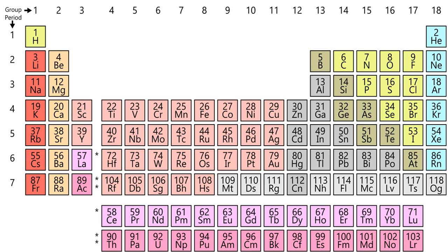With the elements arranged in a spiral on a cylinder by order of increasing atomic weight, de Chancourtois showed that elements with similar properties seemed to occur at regular intervals. His chart included some ions and compounds in addition to elements. His paper also used geological rather than chemical terms and did not include a diagram; as a result, it received little attention until the work of Dmitry Mendeleev. In 1864, Julius Lothar Meyer, a German chemist, published a table with 44 elements arranged by valency, showing that elements with similar properties often shared the same valency. Concurrently, English chemist William Odling published an arrangement of 57 elements ordered on the basis of their atomic weights.